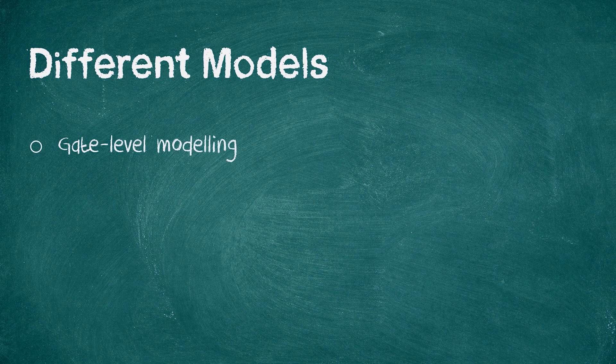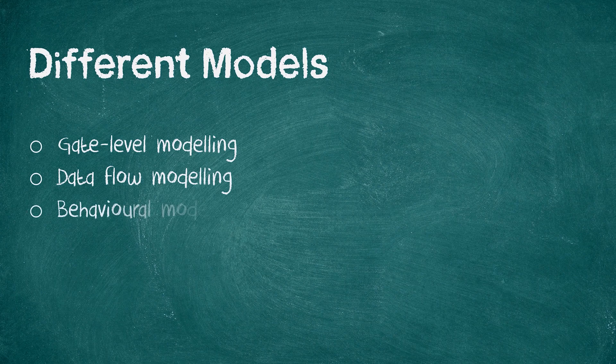In the sixth module, you will learn about the different models used to write Verilog code. Basically, hardware can be represented at different levels of abstraction — for example, it can be represented in terms of logic gates or in terms of its behavior.